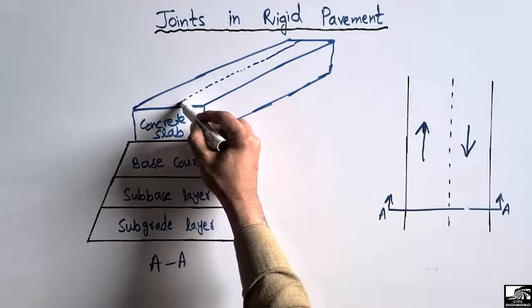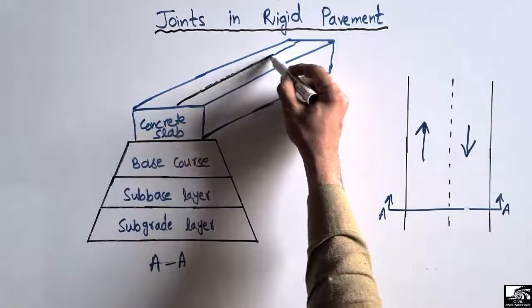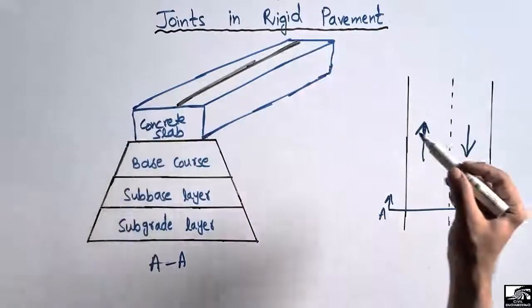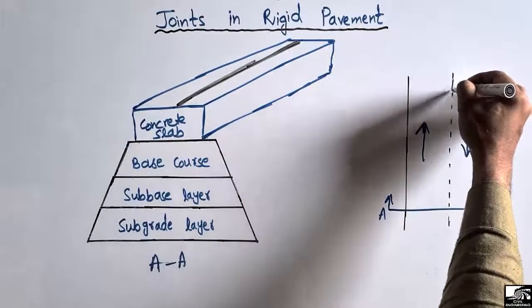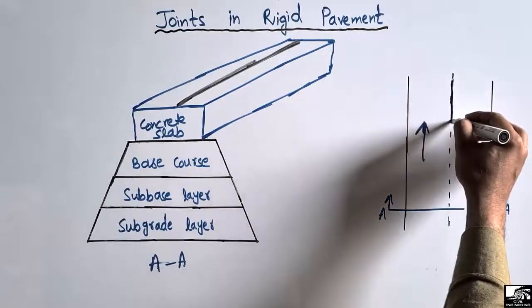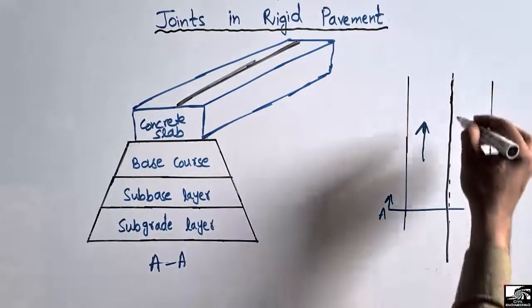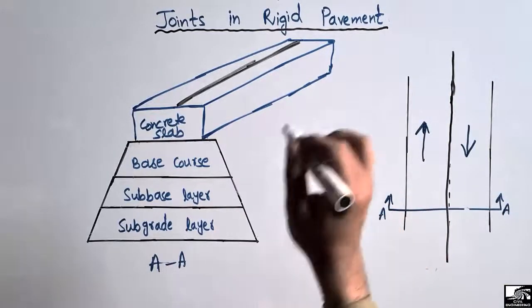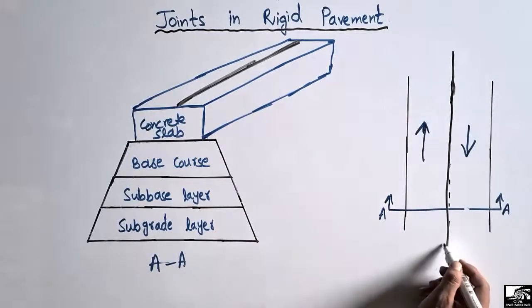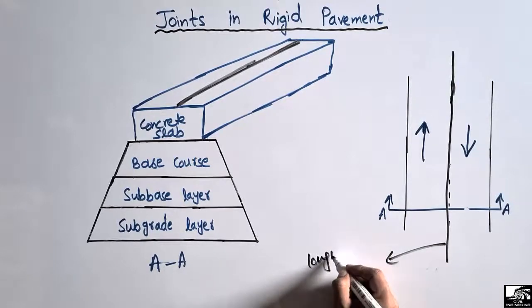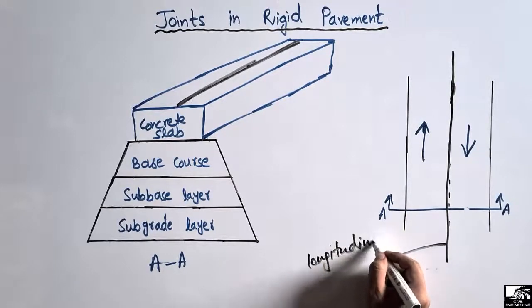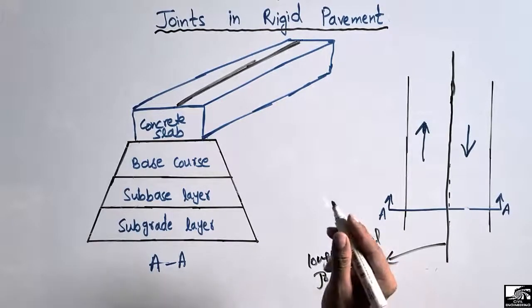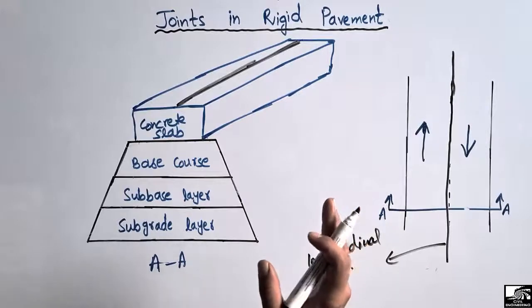One joint is used along the longitudinal direction of the pavement, so this joint is known as the longitudinal joint. In the longitudinal view we see the joint here at the center line. This joint is known as the longitudinal joint because it is provided along the longitudinal direction of the rigid pavement.